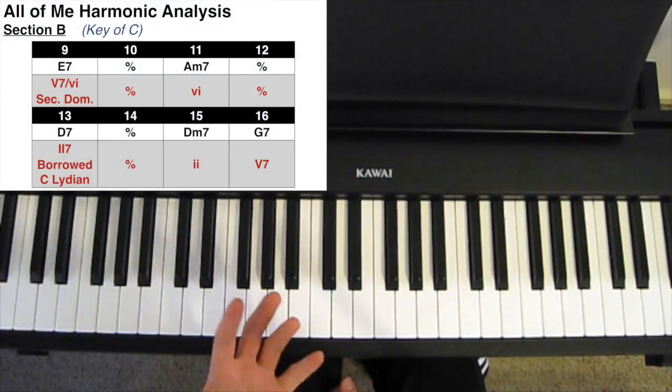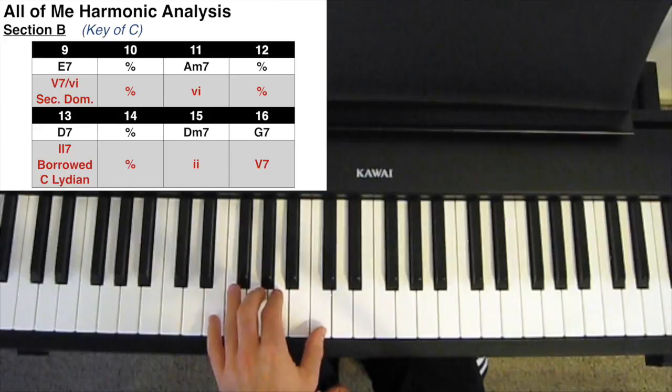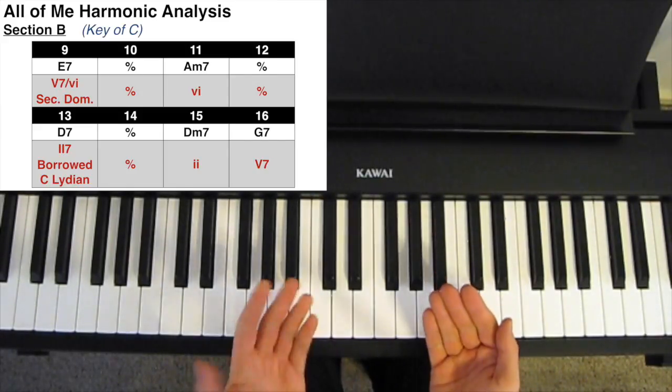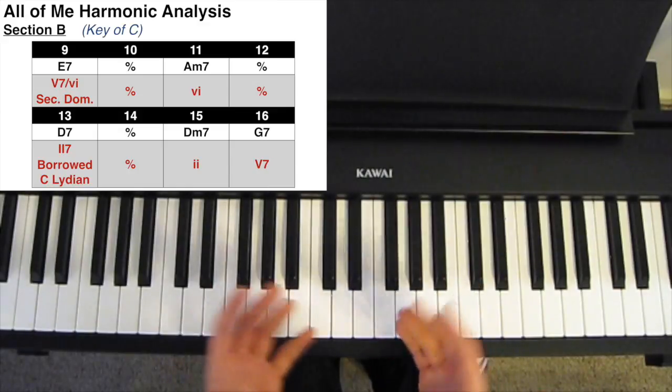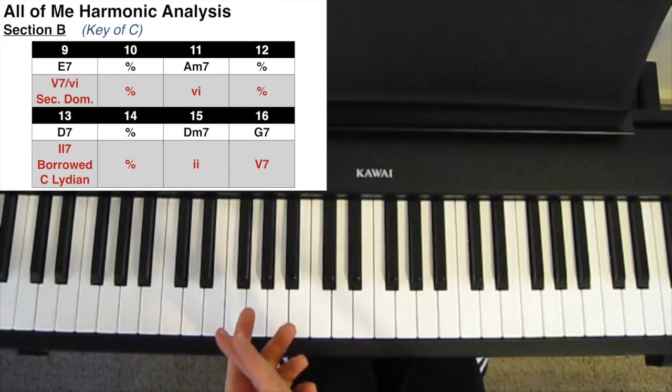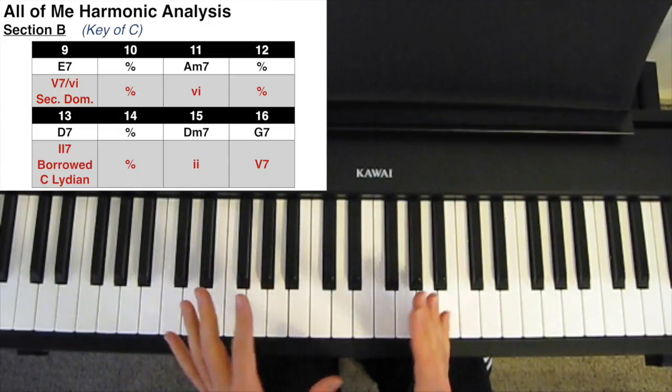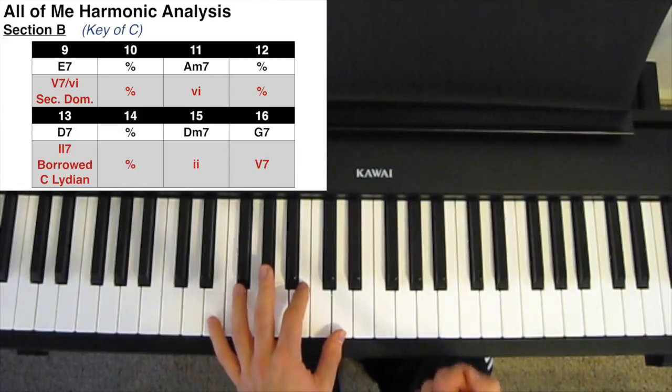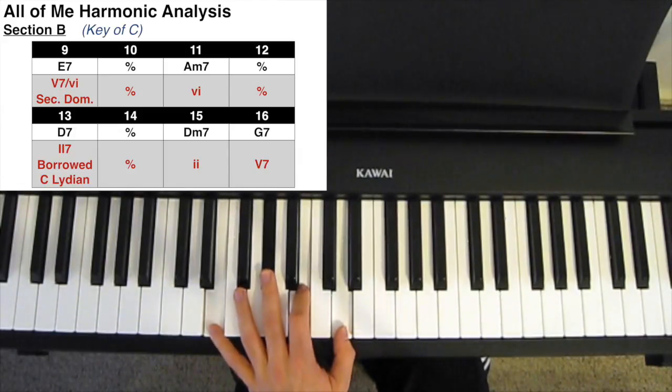Then, with section B, we have an E7 going to an A minor 7. You could analyze this as a 5-1 cadence, perfect cadence, in the key of A minor, which is the relative key. But I'm going to analyze this as still in the key of C major, and so the E7 is a 5 of 6 secondary dominant, going to the 6.